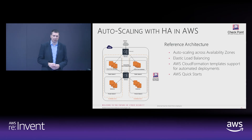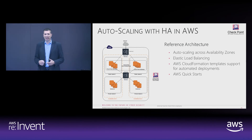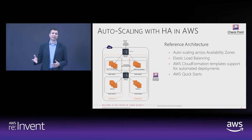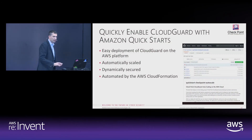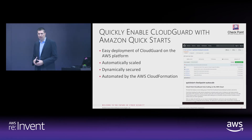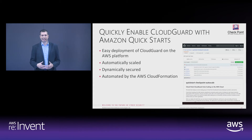Another example is auto-scaling with high availability. Based on the reference architecture, we provide auto-scaling across availability zones with elastic load balancing, working with CloudFormation templates to support automated deployments and also supporting quick starts for automated deployments. The quick start we're offering is for auto-scaling — easy deployment of Cloud Guard as part of the Amazon platform, automatically scaled, dynamically secured, and based on CloudFormation.